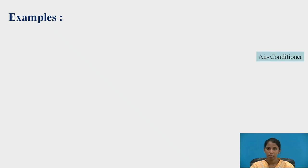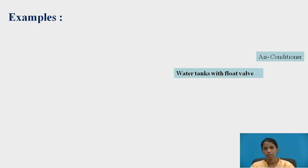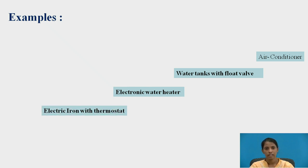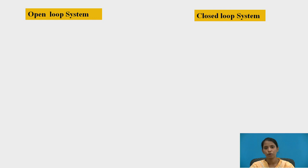Examples of closed loop control systems: first, an air conditioner, where air temperature and humidity are controlled according to the requirement. Second, a water tank with a float valve, where the tap is automatically turned off to stop the water supply. Third, an electronic water heater that monitors temperature. Fourth, an electric iron with a thermostat that maintains temperature. Fifth, a refrigerator.